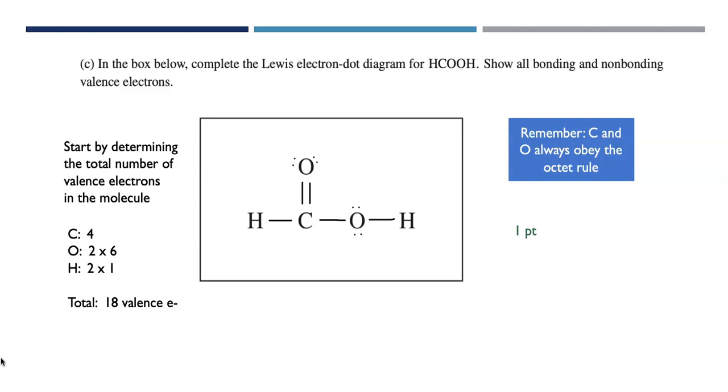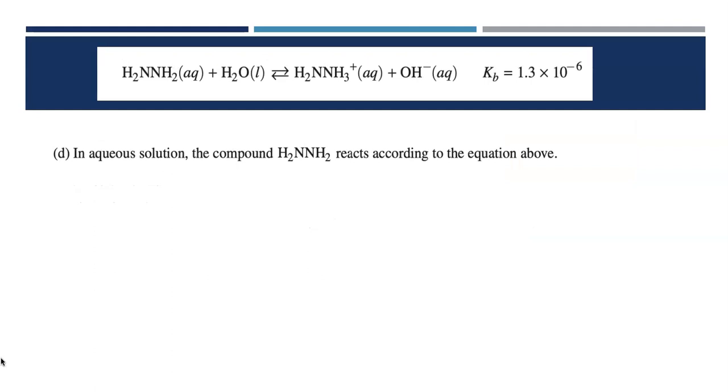In terms of scoring, this part was worth 1 point for a valid Lewis structure that follows all the rules. So far, it's been pretty reasonable. It's about to take a turn towards more complication. In aqueous solution, the compound H2NNH2 reacts according to the equation above. And I want to take a moment and explore this equation a little bit because it's got some relevant information. H2NNH2 here is acting as a base. Water is acting as the acid, donating H+ to H2NNH2. And forming H2NNH3+. Notice how that ionizable hydrogen has attached to the nitrogen end of the molecule. And I'm generating a hydroxide ion as well. It's acting as a base. And we're given a Kb value for this reaction.